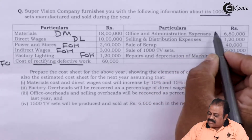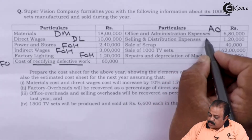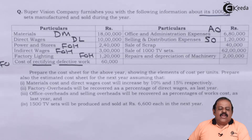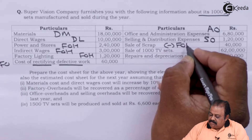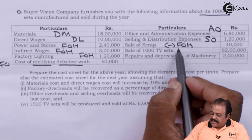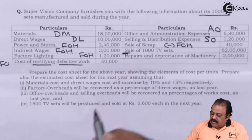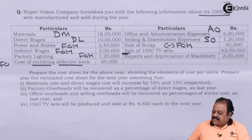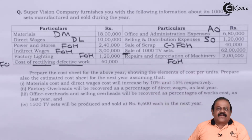Office and administration expenses — administration overheads. Selling and distribution expenses — selling overheads. Sale of scrap: this will be considered as factory scrap and it will be deducted from factory overheads. Sale of 1000 TV sets — they have given the value of sales as 62 lakhs. Repairs and depreciation of machinery — that is an amount of factory overheads.